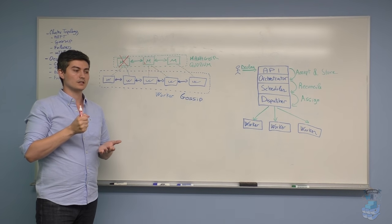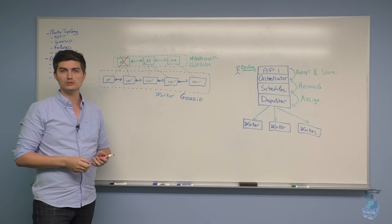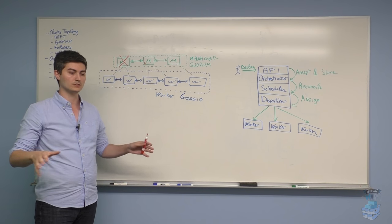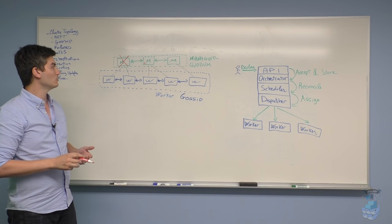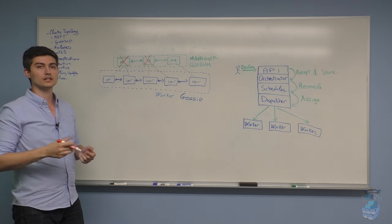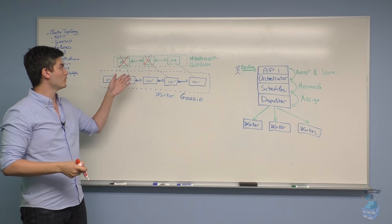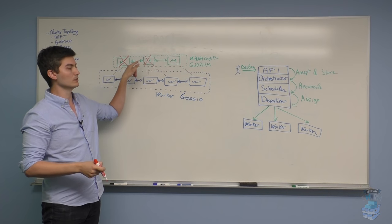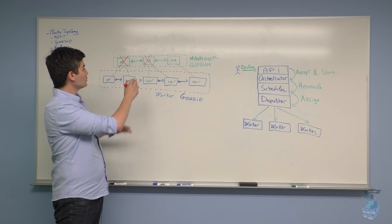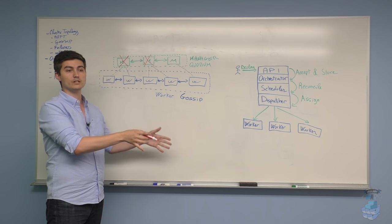Between managers, there's a leader election going on. One of the managers is elected as leader, and the leader is responsible to perform operations such as scheduling containers or ensuring the state is consistent. If we lose the leader, for the workers it's exactly the same process—those connected to the leader will automatically reconnect to another manager. But the other managers are also aware that the leader went down and will perform a leader election. Eventually another manager is going to be elected as leader and will pick up where the previous leader left off.